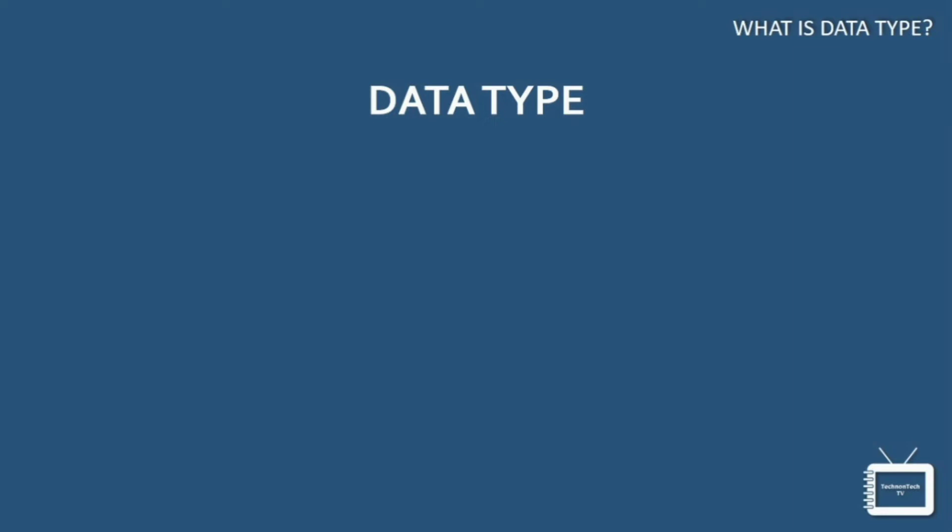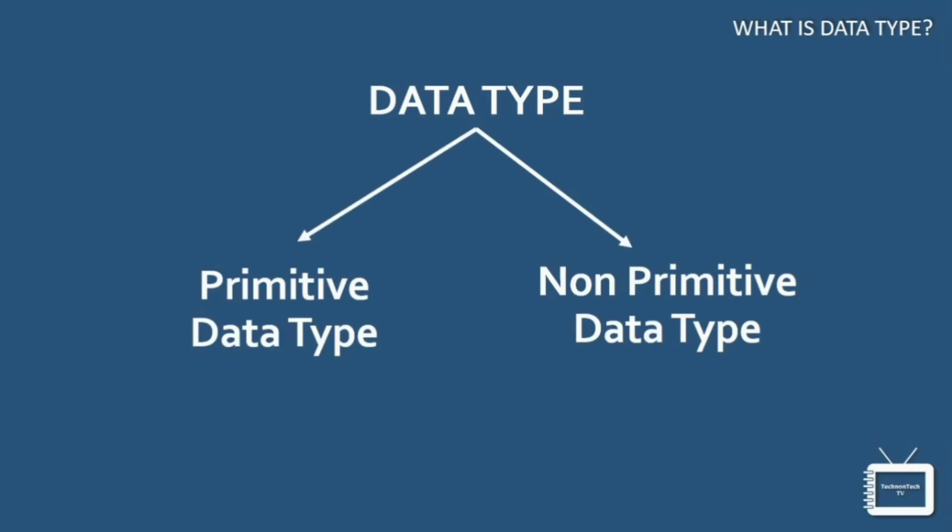So Java separates its data types into two main categories: primitive data types and non-primitive data types. Primitive data type is predefined by the programming language. The size and type of variable values are specified and it has no additional methods.